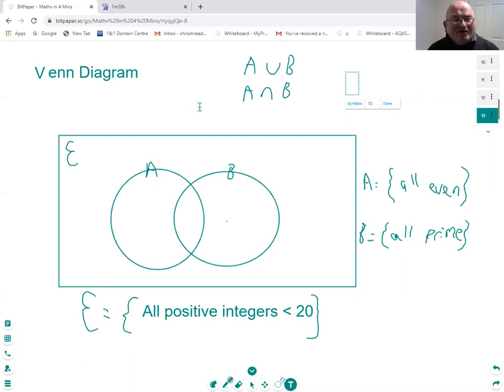Now, usually the Venn diagram, the universal set, the set that everything we're interested in for this particular example is a square, and it's normally called a curly E. I've not made that E particularly curly. It's usually a curly E. And then we've got two sets, A and B. Now, I've said my universal set is all positive integers less than 20.